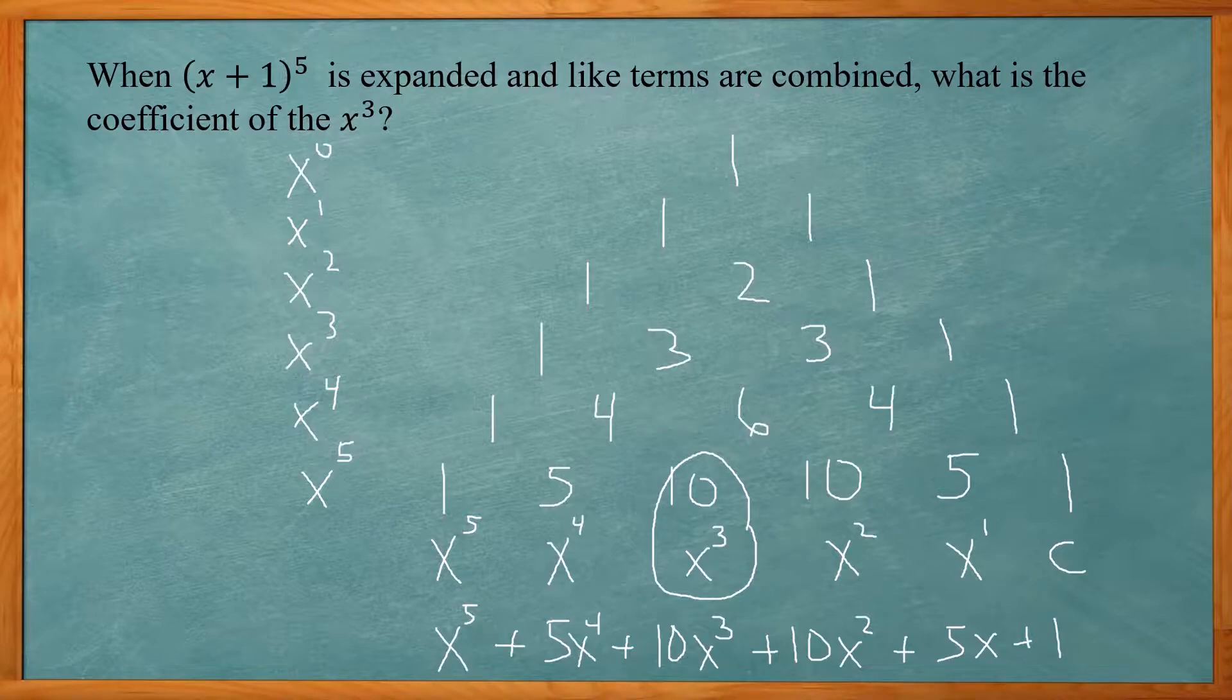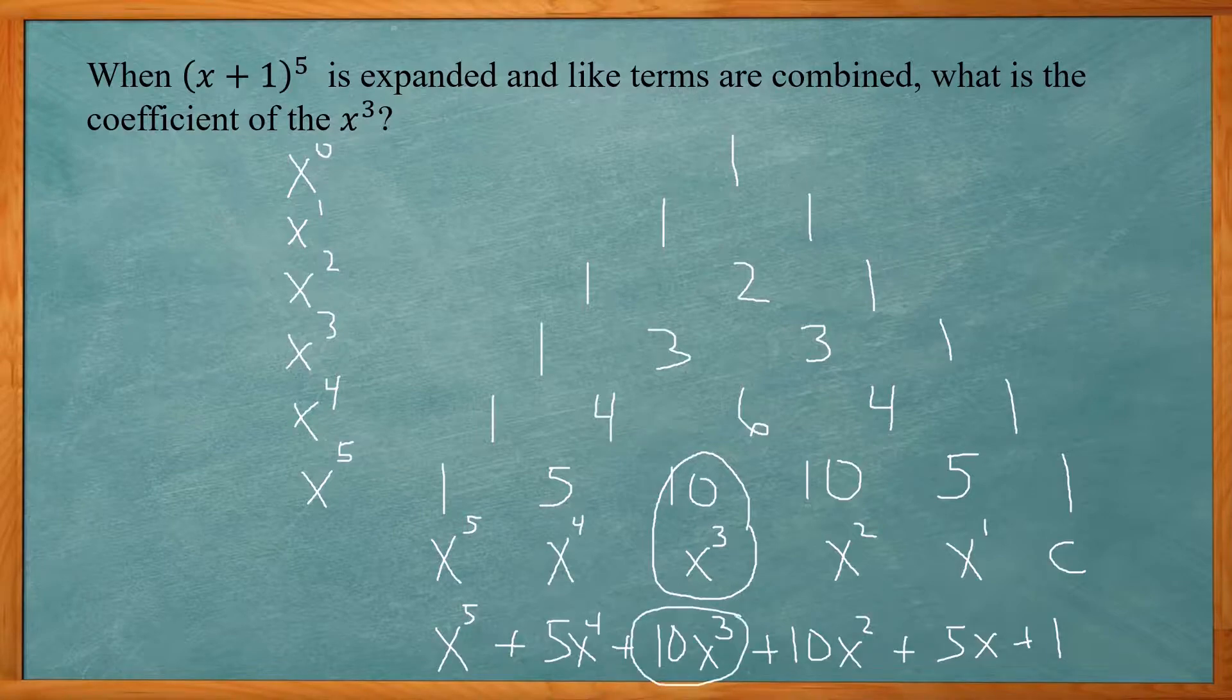So that would be the expanded form of x plus 1 to the fifth power and the coefficient of x to the third term is 10. So in this one we had to solve this by using Pascal's triangle.